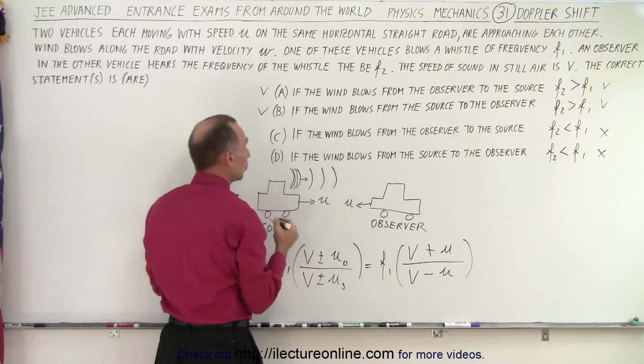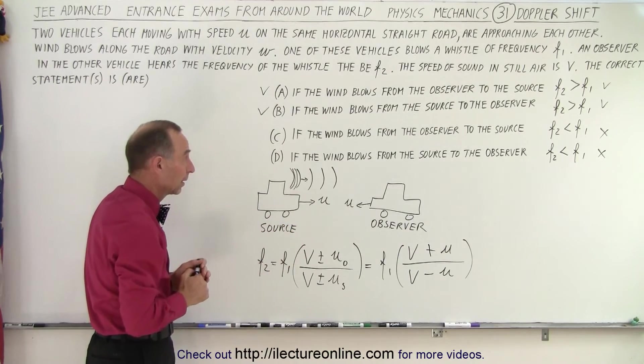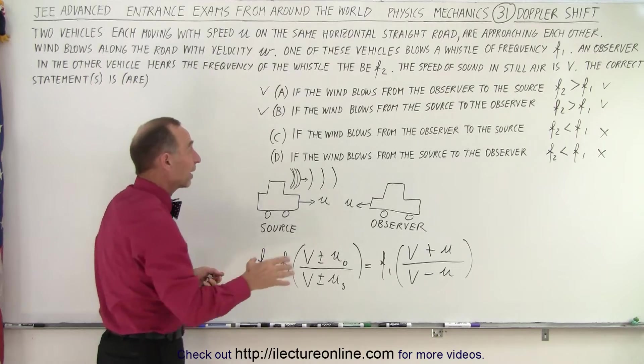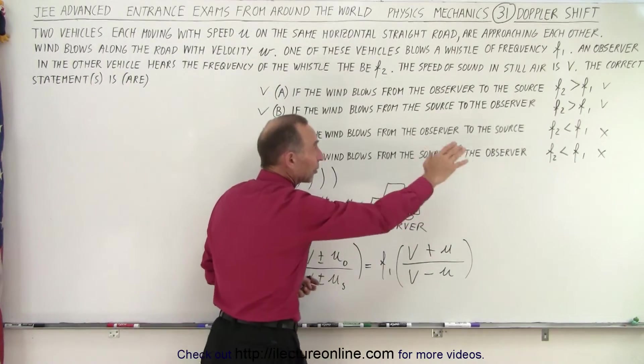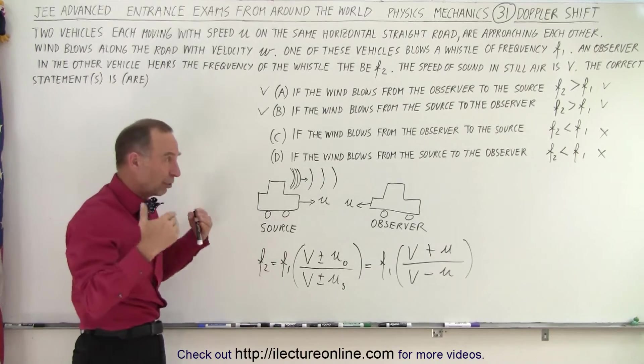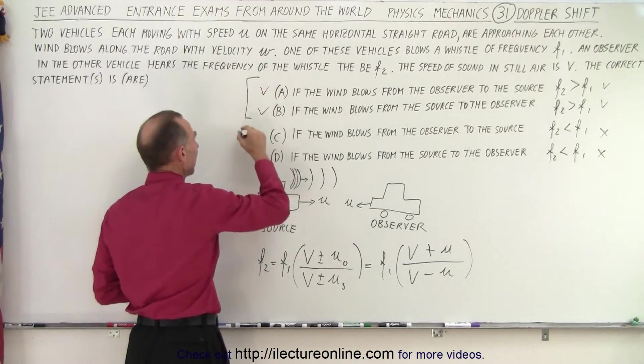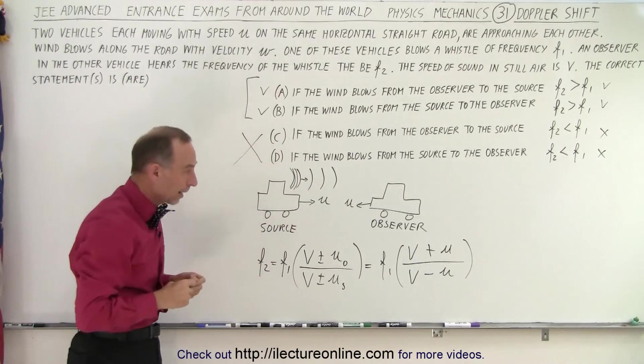the effect still is going to be that the observer will hear higher frequency than the source. That means that this is true again, regardless of the direction of the wind. And that means that C and D must still be wrong because F2 is never smaller than F1 if the observer and the source are moving towards each other. So the answer is A and B, and C and D are not correct.